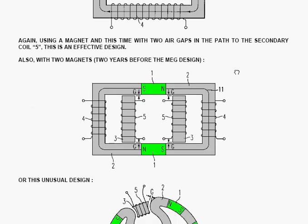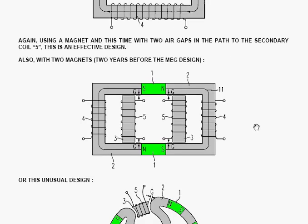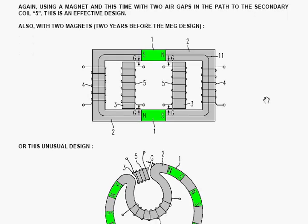Also with two magnets, and patented two years before the MEG design of Tom Bearden. You've got the two magnets here creating magnetic flows, and that essentially is a double version of the previous arrangement with the one frame and one magnet. This one again has got two air gaps between the main frame itself and the output coils and their core.